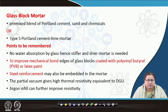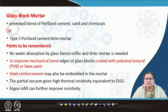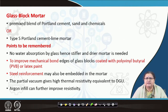In the glass block system, the mortar is a pre-mixed blend of Portland cement, sand, and chemicals. The sand used is very fine, and it may be a Portland cement-lime mortar. Unlike brick, glass is not at all an absorber of water — water absorption is zero. Because the water absorption is less, the mortar should be stiff, and to improve the mechanical bond at the edges, it may be coated with poly vinyl buteryl (PVB) or even latex paints.